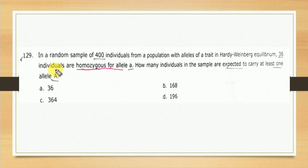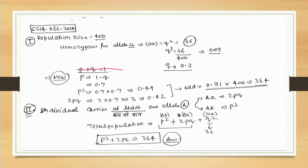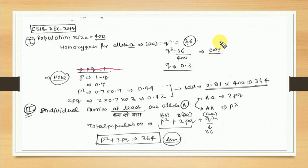Let's see the solution of this particular question. I am going to discuss about two alternative methods. So, homozygous recessive — how to calculate q²? q² equals 36 divided by 400, which gives 0.09. This is the value of q², that is the recessive homozygous genotypic frequency.